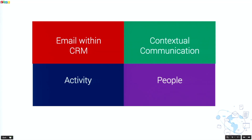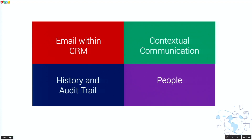The contextual communication means emails will be associated to the respective contact or lead. When you open a contact record or a lead record, you would see the contextual email communication you had within that record. You would also be able to see the history — all email conversations you had with that respective lead or contact.